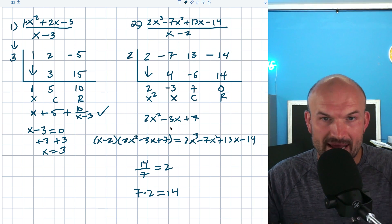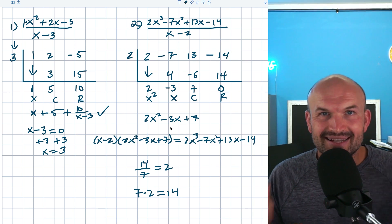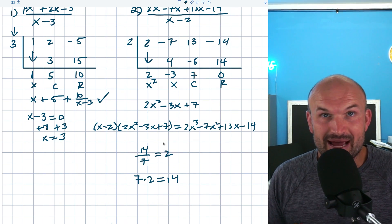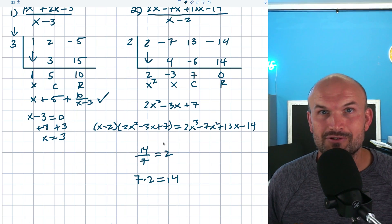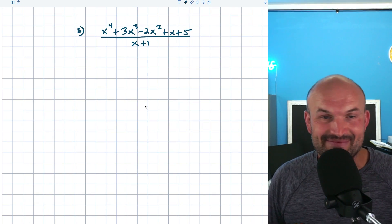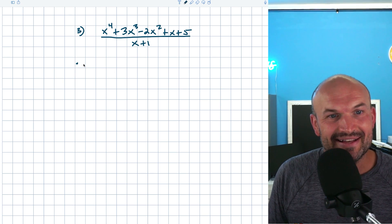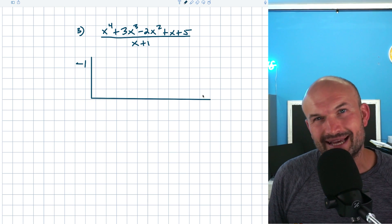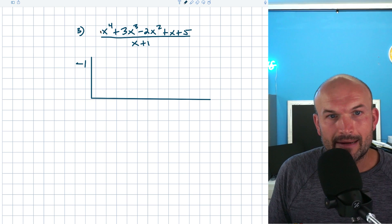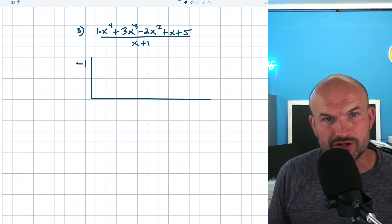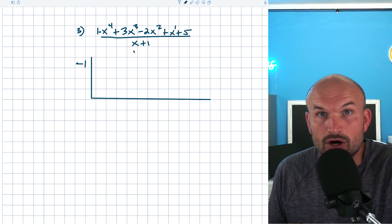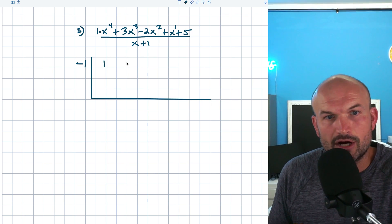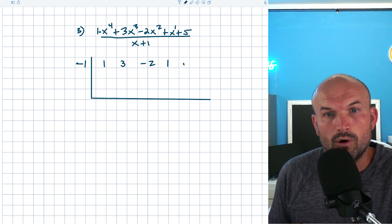Let's do one more example to make sure we have a good understanding of synthetic division. I have negative one on the outside — set X plus one equal to zero, you get negative one. I'm going to take my coefficients. We have a one here; I have everything — four terms: degree four, three, two, one, right, and my constant. So I don't need a zero placeholder. I'll take all the coefficients: one, three, negative two, one, and five.